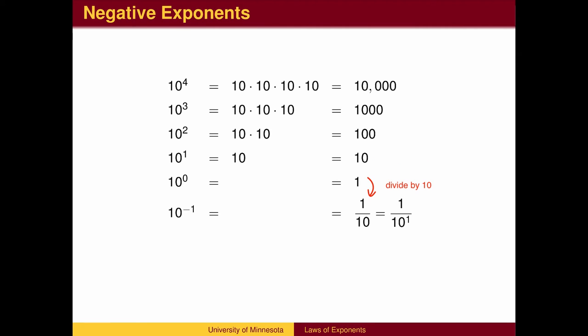If we continue to reduce the exponent by 1, the exponents become negative. On the right-hand side, we continue to divide by 10. We now get fractions.